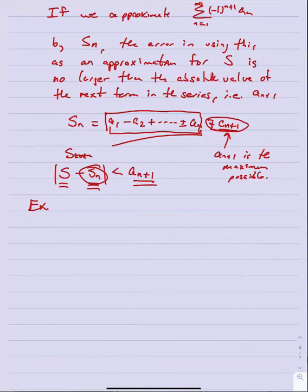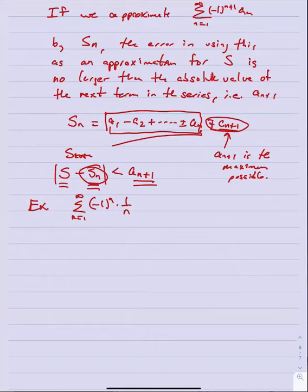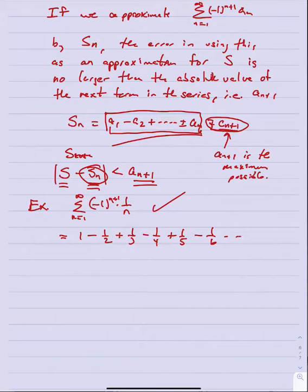Let's apply this to our earlier example: Σ (n=1 to ∞) (-1)^(n+1) · (1/n). We already showed it converges. Written out: 1 - 1/2 + 1/3 - 1/4 + 1/5 - 1/6 + .... Let s_3 = 1 - 1/2 + 1/3 = (6-3+2)/6 = 5/6.